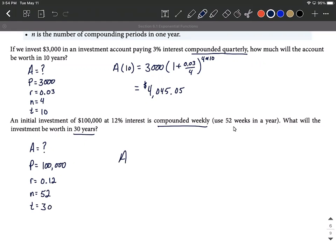A of 30 equals 100,000 times 1 plus 0.12 divided by 52, raised to the 52 multiplied by 30, using that star to indicate multiplication. Hopefully we'll get comfortable getting this all in the calculator at once.